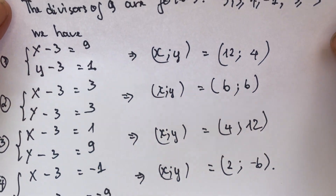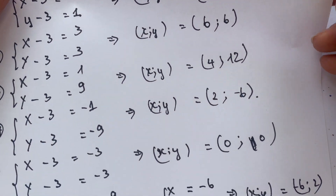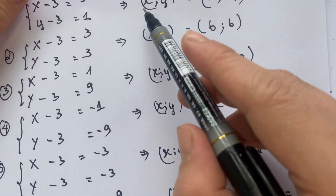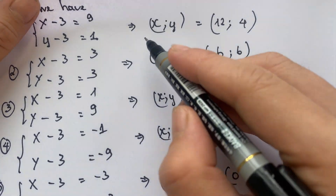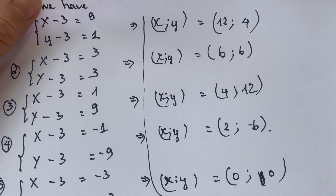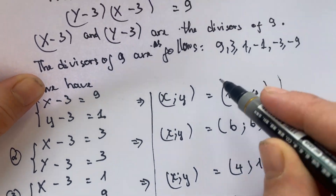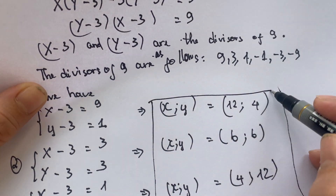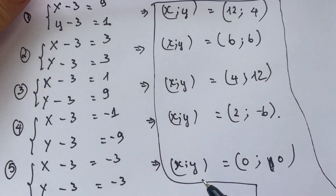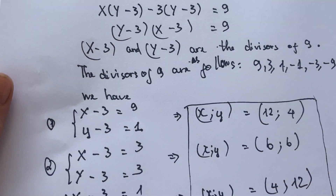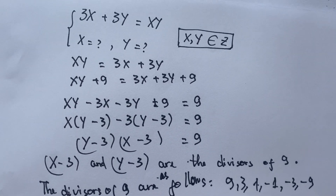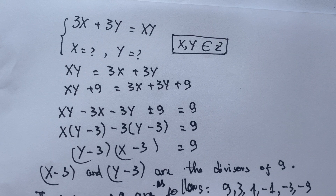So for this equation, we have 6 pairs of x and y, where x and y are integer numbers. Thank you for watching my video. Don't forget to like my channel. I love you all. See you.